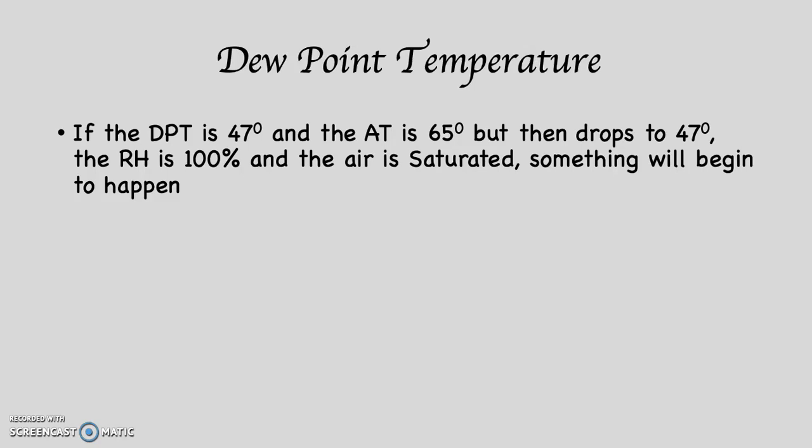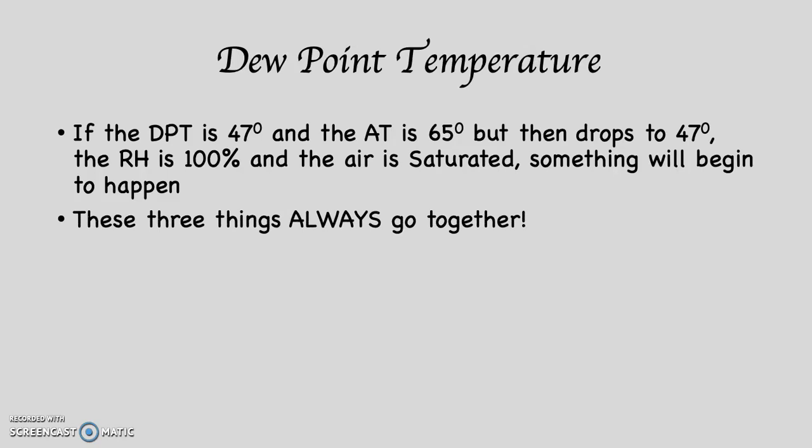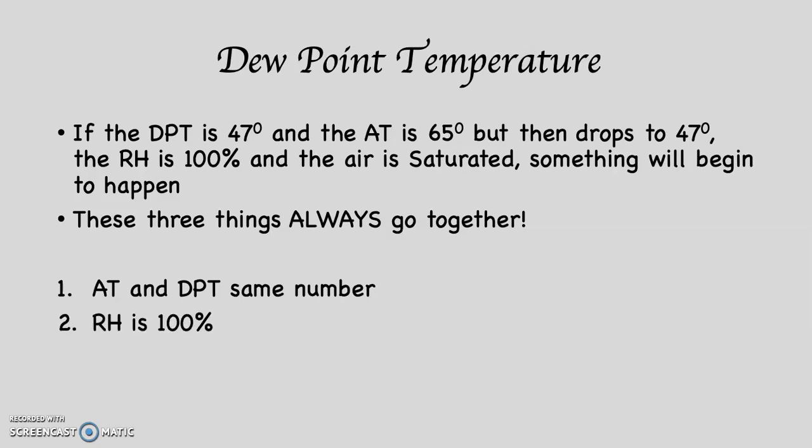It's a little like the glasses analogy: if you have a 12-ounce glass and there are 12 ounces of water in it, it's 100% full; if there are only 6 ounces in it, it's 50% full. These three things always go together: when air temperature and dew point temperature are the same number, the relative humidity is 100% and the air is saturated. Likewise, if the air is saturated, then relative humidity is 100% and air temperature equals dew point temperature. If any one of these three conditions exists, all three exist — you cannot have one without the others.